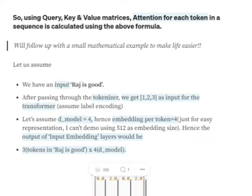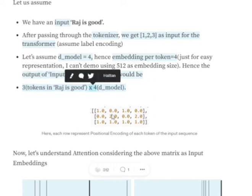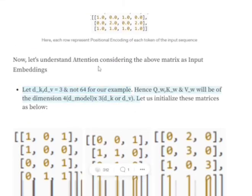After passing it through the tokenizer we get tokens 1, 2, 3. After passing through the input embedding and positional encoding layer we get some embedding for this sentence. Assuming the dimension of the model is 4 (in the paper it was 512, but that's difficult to demonstrate), the embedding per token would be 4. So the output embedding dimension would be 3 × 4 — three tokens (raju, is, good) times the model dimension of 4. Assume this is the 3 × 4 matrix we get after the input embedding plus positional encoding layer.